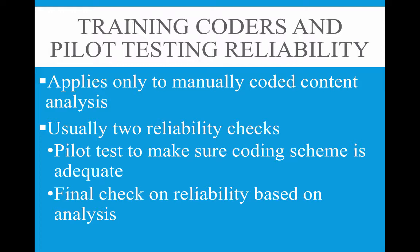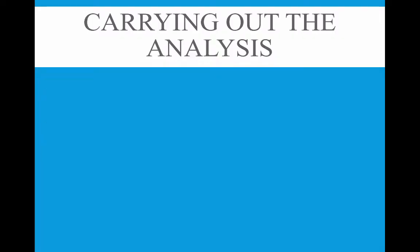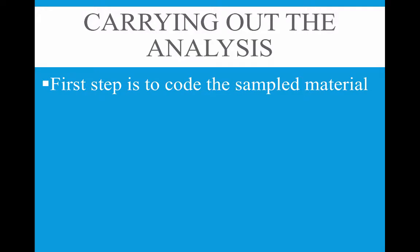In the book, researchers pilot-tested by coding about 10 percent of articles that could be analyzed overall, just to make sure the codes are sufficient, mutually exclusive, or anything else — to find errors before doing all the work. That way you don't end up going back and having to start over. The other reliability check is a final check based on the analysis — you learn from the pilot test, make adjustments, and then do a final check to make sure everything is right before carrying out the full analysis.